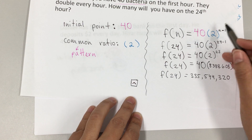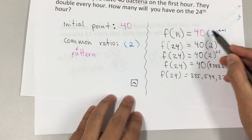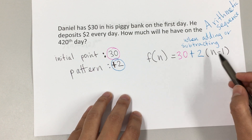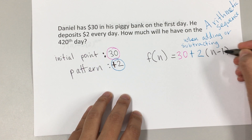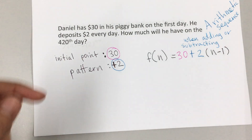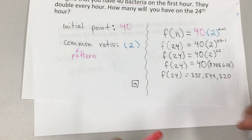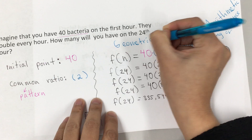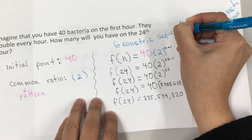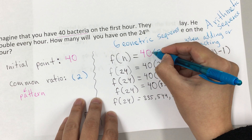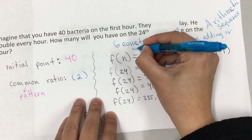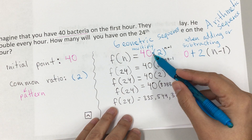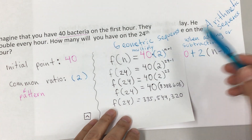So n minus 1 is not going to be a power like in a geometric sequence. When we're multiplying it's a power; when we're adding it's going to be a factor — we multiply by n minus 1. Going back to the top: a geometric sequence is when the pattern is to multiply, whether by a whole number or by a fraction.